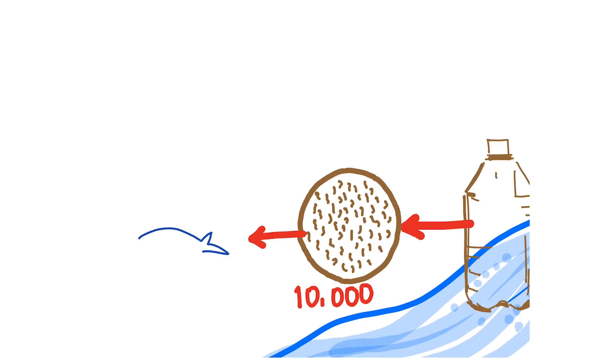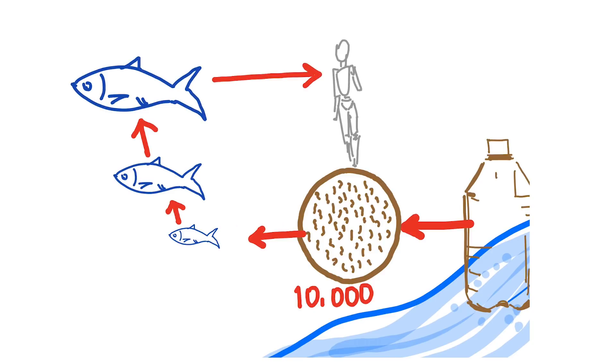Those microplastics are then consumed by fish, and make their way up the food chain, introducing chemical toxins back into humans. The fish we eat could include microplastics from the water bottles we drink from. That's why scientists are finding that the biggest fattish fish have the highest levels of mercury, PCBs, and other dioxins.